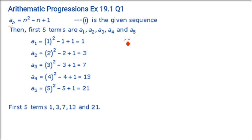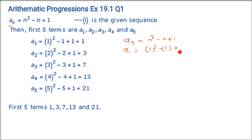We have to find the 5 terms. Starting with the first one: aₙ = n² - n + 1. You just replace n by 1, n by 2, n by 3, n by 4, n by 5. So a₁: put n = 1, you get 1 - 1 + 1 = 1. So the first term of this sequence is 1.